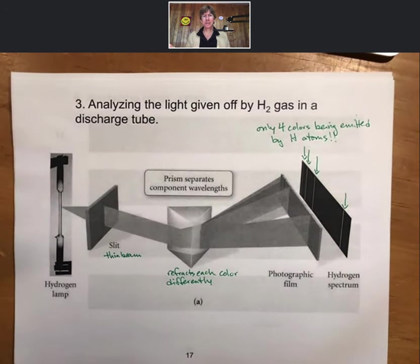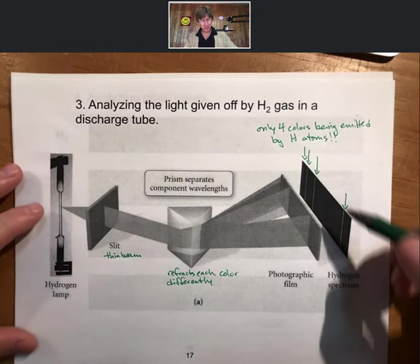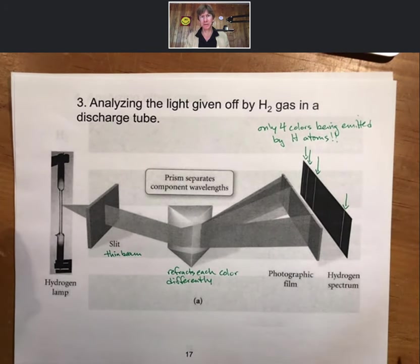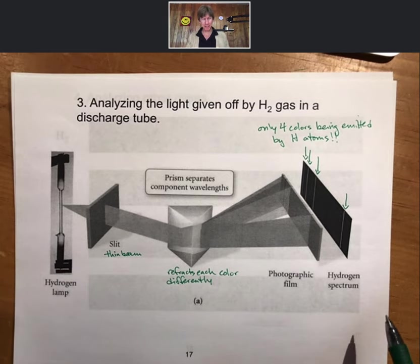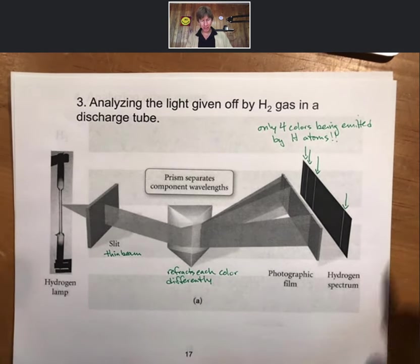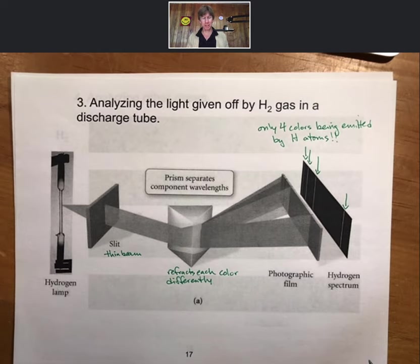That gets a couple of exclamation points because at the time the scientists were stunned. They did this experiment with the full expectation of getting a full rainbow of colors. This is pre-quantum mechanics — this is part of the cause of why quantum mechanics was developed, one of the initial pieces of data. Hydrogen has four colors and only four colors, at least in the visible region.